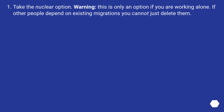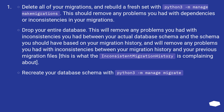The first is the nuclear option. Warning: this is only an option if you are working alone. If other people depend on existing migrations, you cannot just delete them. Delete all of your migrations and rebuild a fresh set with python3 manage.py makemigrations. This removes any problems with dependencies or inconsistencies. Then drop your entire database and recreate your schema with python3 manage.py migrate.